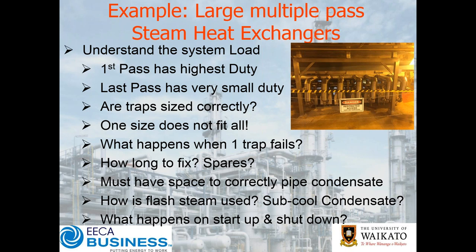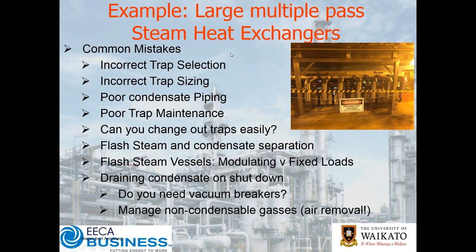The number one thing here is we must have the space to correctly pipe the condensate, unlike in that picture. The extra separate questions are: how are we going to use our flash steam — are we going to sub-cool the condensate? And very importantly, what happens on startup and shutdown? Common mistakes we often see include: incorrect trap selection, incorrect trap sizing, poor condensate piping, poor trap maintenance, can you change out the traps easily, getting good separation between flash steam and condensate, do we have a flash steam vessel, and with modulating versus fixed loads — all points we've covered in the flash steam webinar.